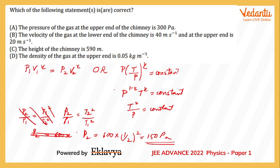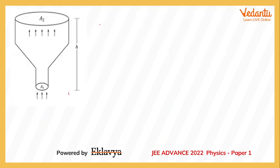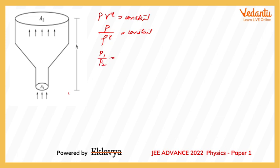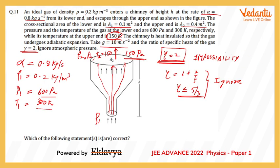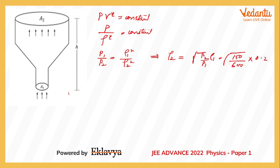Now, can we find the density at the top? Yes — using p/ρ^γ = constant, we get p1/p2 = ρ1²/ρ2². Solving for ρ2: ρ2 = ρ1 × √(p2/p1) = 0.2 × √(150/600) = 0.2 × 0.5 = 0.1 kg/m³.